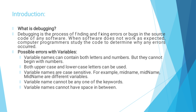What is Debugging? Debugging is the process of finding and fixing errors or bugs in the source code of any software. When software does not work as expected, computer programmers study the code to determine why any errors occurred.